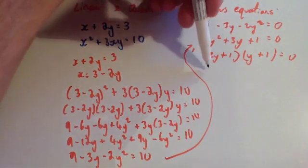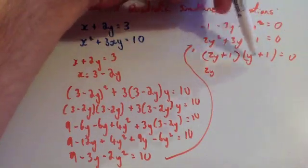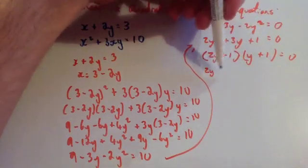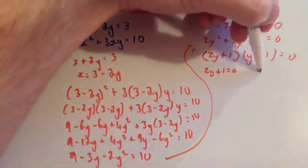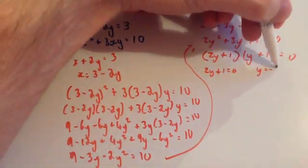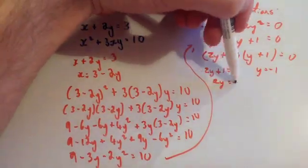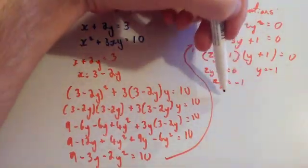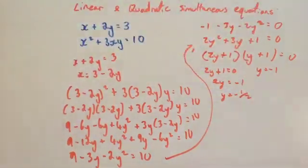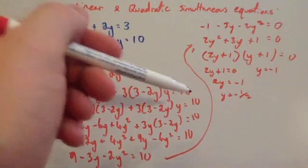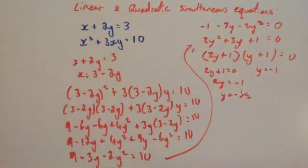Since the product equals 0, either 2y plus 1 equals 0, or y plus 1 equals 0. From the second factor, y equals minus 1. From 2y plus 1 equals 0, take away 1 to get 2y equals minus 1, so y equals minus one half. So we've got two solutions: y equals minus 1, or y equals minus one half.